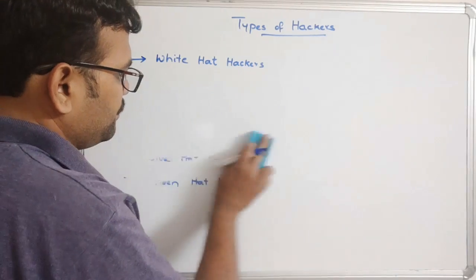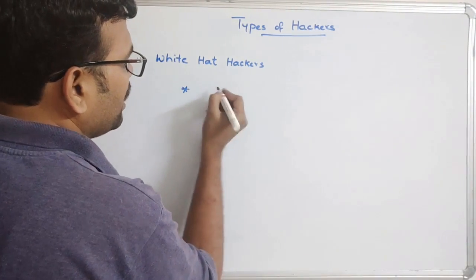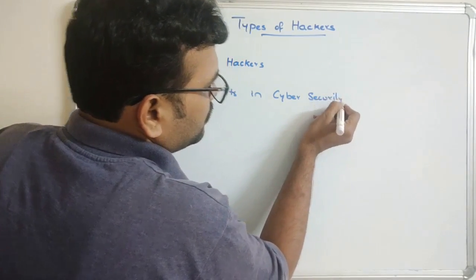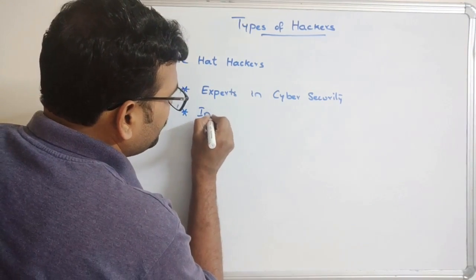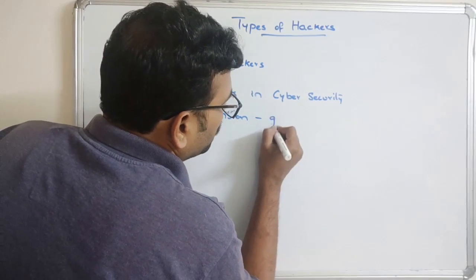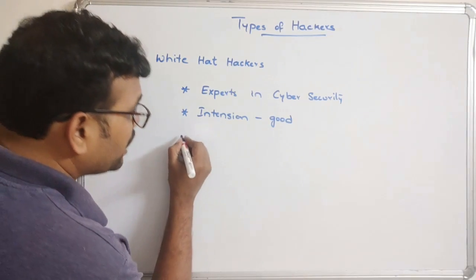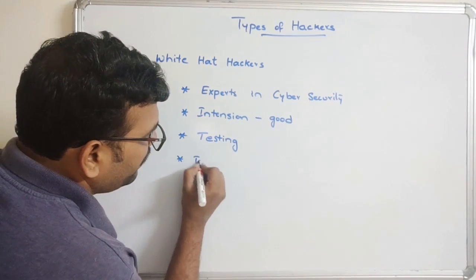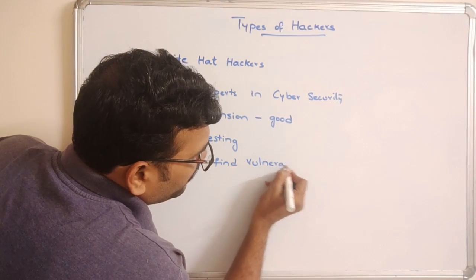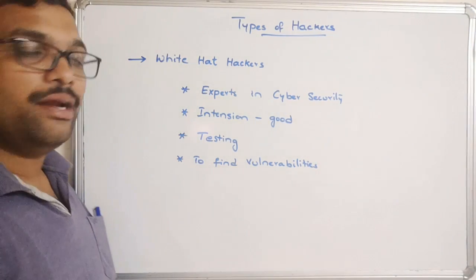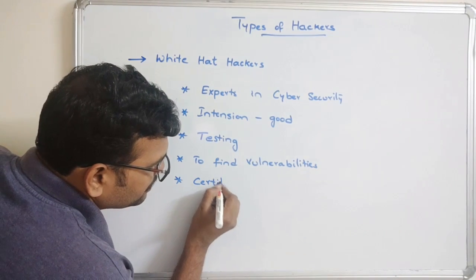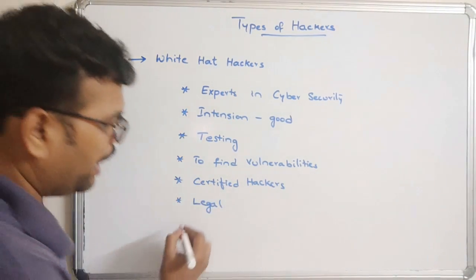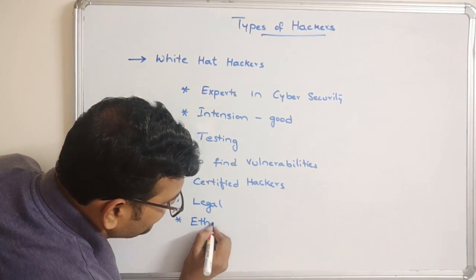First, let us start with the white hat hackers. These hackers are experts in cyber security, and their intention is good. They do the work for testing purposes — that means to find vulnerabilities. These are all certified hackers, and this is legal. These are also called ethical hackers.